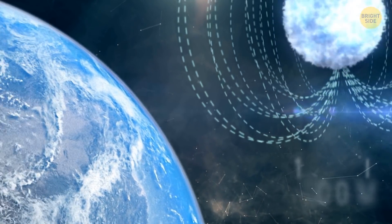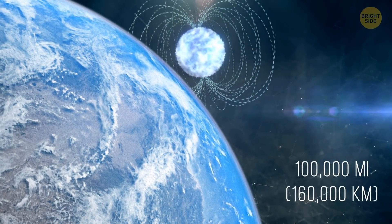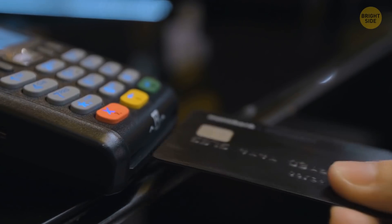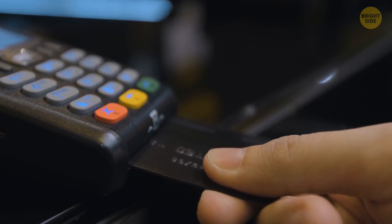If a magnetar flew within 100,000 miles from our planet, it'd wipe out the data on every single credit card in the world.